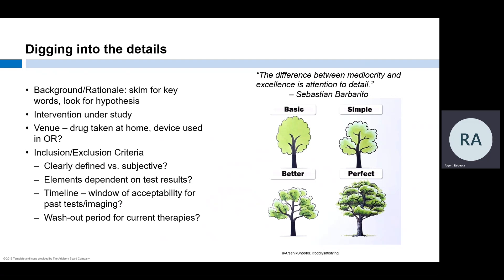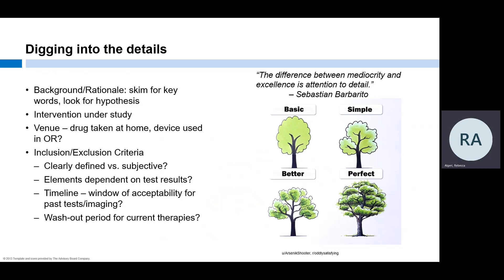It's time to dig into the details. The difference between mediocrity and excellence is attention to detail. Having a thorough understanding of the protocol affects every aspect of executing the trial—it will decrease deviations, increase the team's efficiency, help you manage risk, and safeguard subjects. I like to skim the background and rationale sections for any info on the patient population, but I'm mostly looking for the hypothesis and to pick out any terms or phrases that are used repeatedly, as these are likely to be keywords.